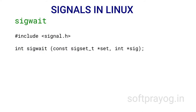sigwait has two parameters: a pointer to a signal set and a return parameter pointer to a signal. A thread wanting to block waiting for a signal in the set first blocks the signals specified in the set before calling sigwait. When one of the signals specified in the set comes, the wait is over; the thread accepts the signal and the accepted signal is returned via the second parameter.